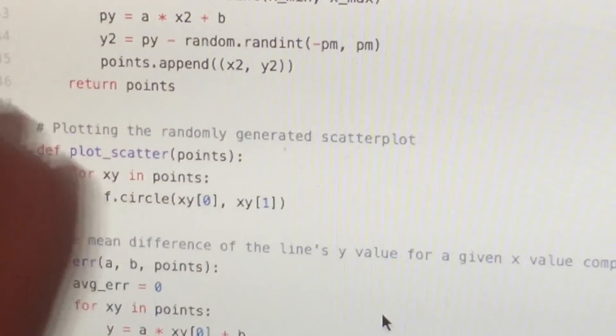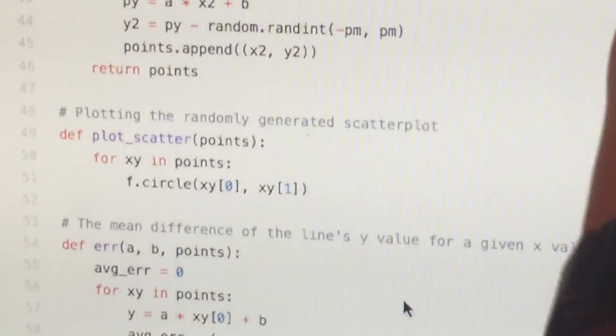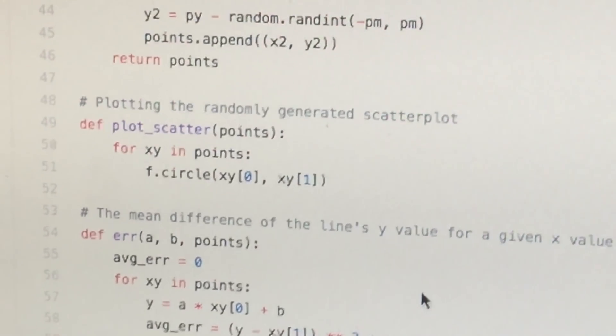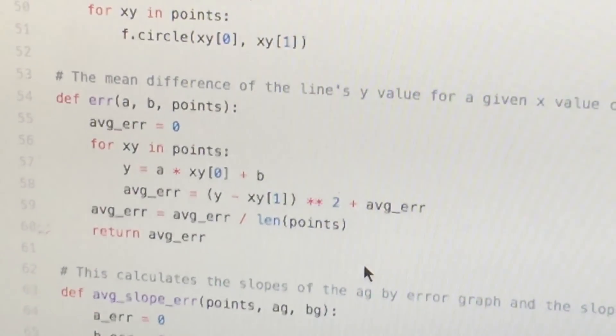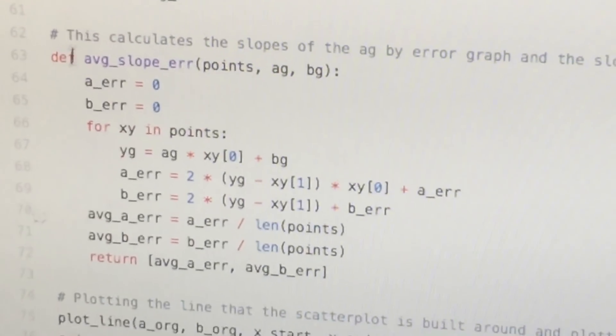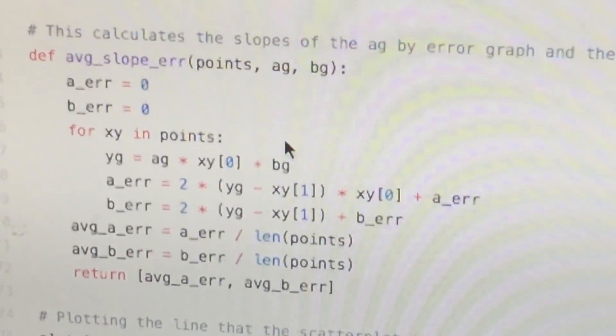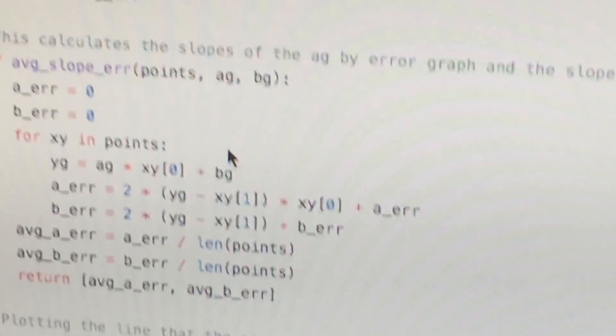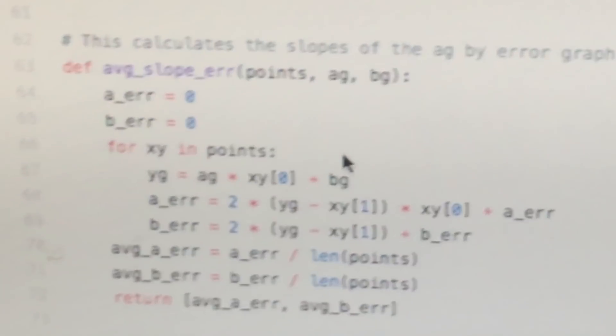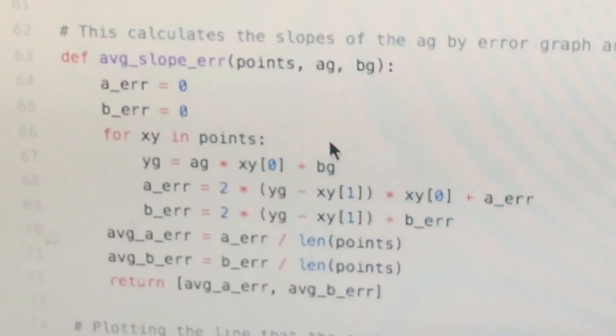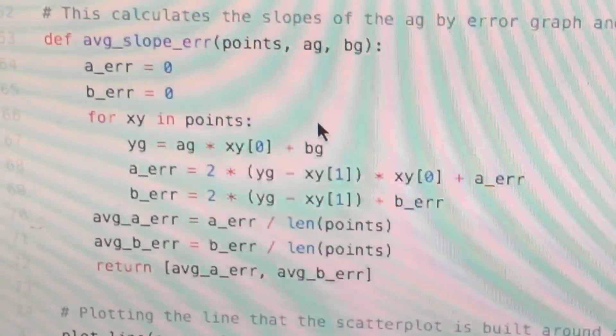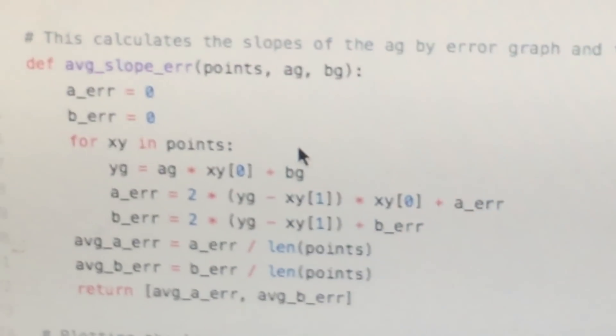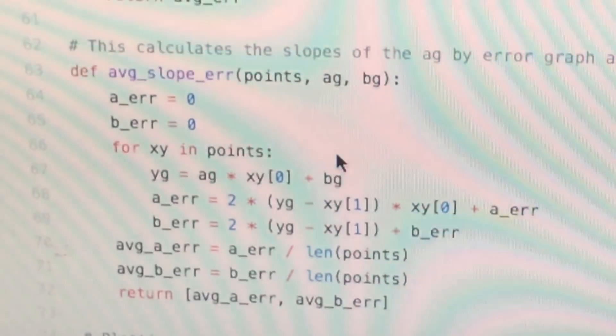Because instead of it being not as slopey, it'll have a steeper slope. So that's how it calculates the error. Now this is the average error of your slope.